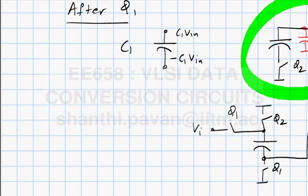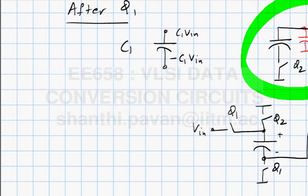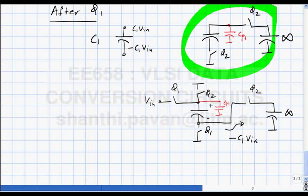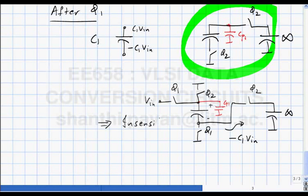During phi1 the charge on the bottom plate is -C1·Vin. Connecting the bottom plate to the infinite capacitor and the top plate to ground: the charge transferred is -C1·Vin. What happens to the charge on parasitic Cp1? It goes to ground. We find that this arrangement is insensitive to Cp1.